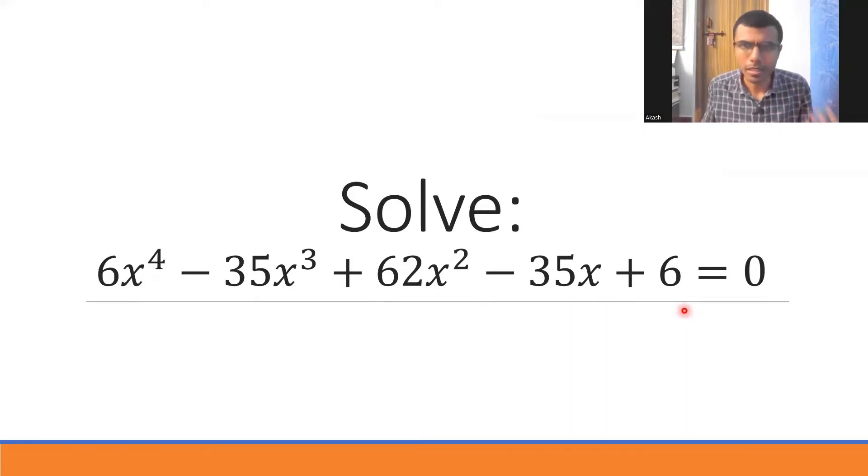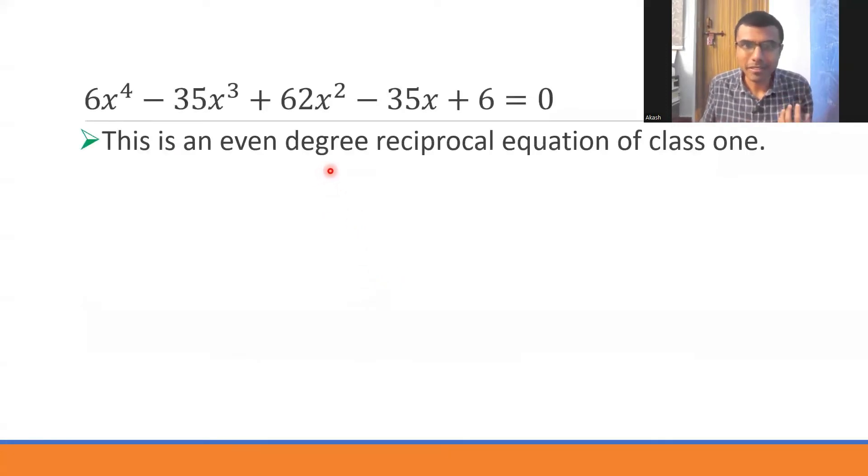This is a bicoordinating equation. On the left hand side we have a polynomial of degree 4. Now let's see how to solve this. If you observe, this is an even degree reciprocal equation of class 1. Don't get confused, I'll explain each word.